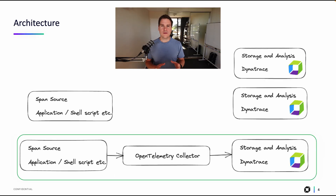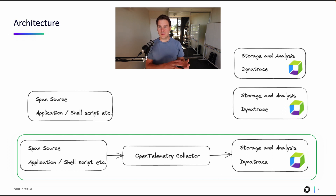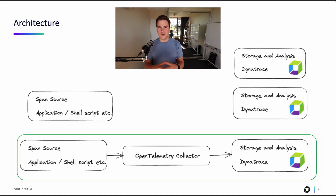To tie those two things together — the source and the destination — we need a component in the middle called the OpenTelemetry collector. The source will send its spans to the collector, and the collector will forward those spans to Dynatrace in the backend.